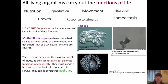All living organisms carry out the functions of life. You have nutrition, growth, reproduction, response to stimulus, movement, excretion, and homeostasis. Unicellular organisms such as an amoeba are capable of all these functions. Multicellular organisms have specialized cells to carry out some of the functions, but not others — but as a whole, all the functions are covered. So if you're looking at specific cells within a multicellular organism, you may not be able to see that response to stimulus or movement, but other cells will have that.